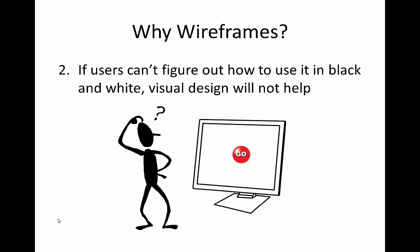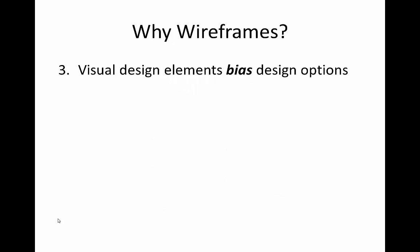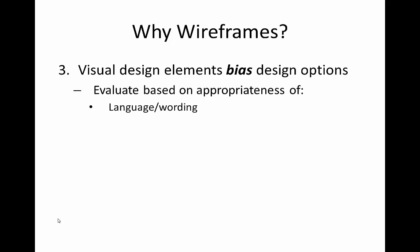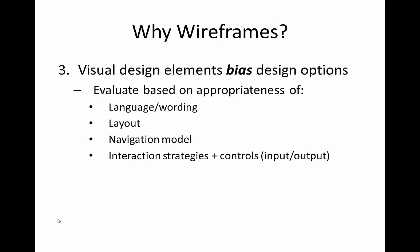We need to make sure we get the design right in black and white before we go and start applying styles. Another reason why we like to stay away from visual design elements like colors, styles, images, and fonts is because they tend to bias our design options. When we're looking at different design options, we want to evaluate these based on the appropriateness of the language or wording used on the screen, based on the layout or where we've put different things on the page, and based on the navigation model — how we allow people to find different parts of the software.